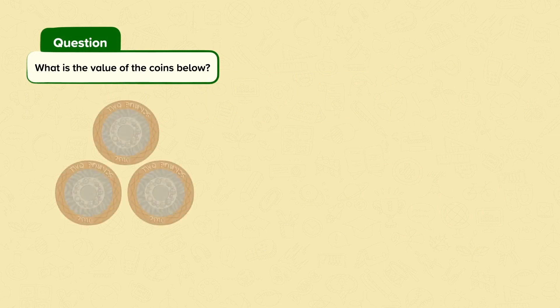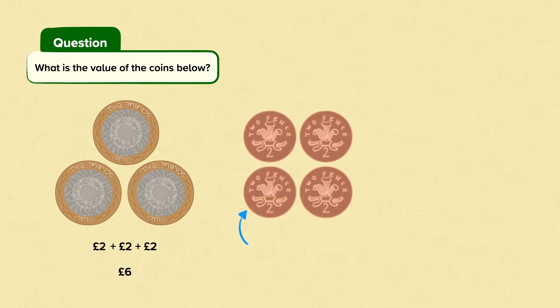What is the value of the coins below? This coin is a £2 coin. We have 4 lots of £2 coins. So, £2 plus £2 plus £2 plus £2 equals £8.